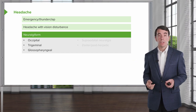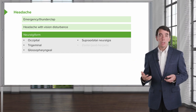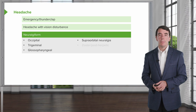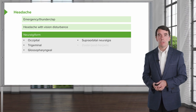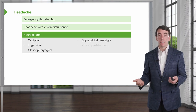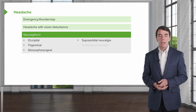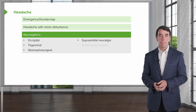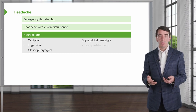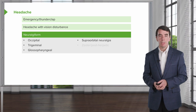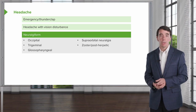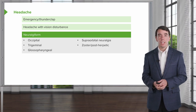Glossopharyngeal neuralgia doesn't always present with headache and sometimes can present with syncope, but it's an important neuralgia-form condition that can cause headache. Any nerve can become irritated or dysfunctional — we can have supraorbital neuralgia or preauricular neuralgia, all presenting with neuralgia-form pain: numbness, tingling, and paresthesias as a prominent symptom complex. Zoster and herpes can also affect the face and present with headache.